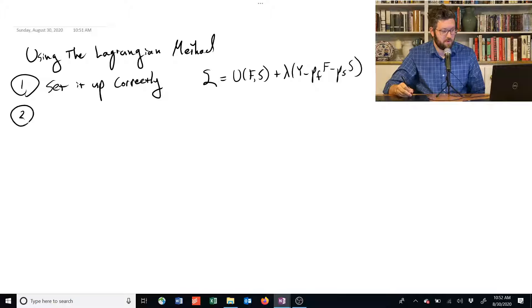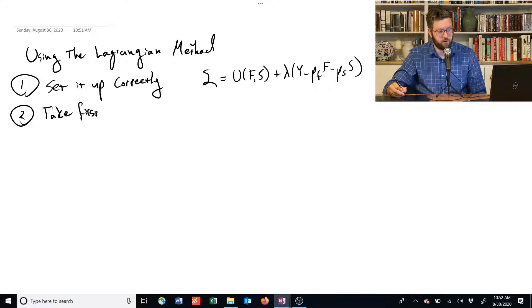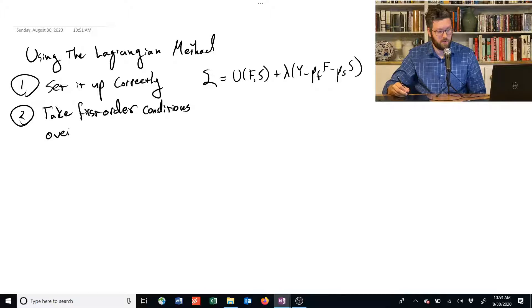The second step, just like with the firm's profit maximization problem, we're going to take first-order conditions over all endogenous variables. And in particular, for a consumer,